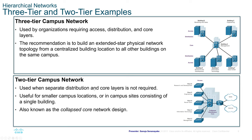The two-tier campus network example uses a collapsed distribution core connecting all the access layer switches. It is used when separate distribution and core layers are not required and is useful for smaller campus locations consisting of a single building, also known as the collapsed core network design. A 30-story building where you need to connect all floors to a network would be a good use case for two-tier design.